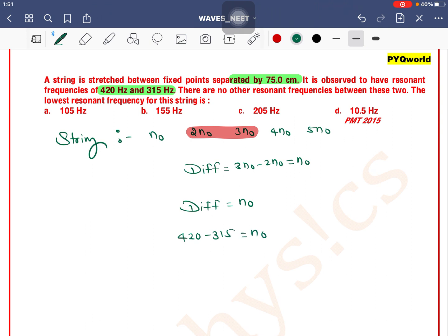So 420 minus 315 equals n0, which equals 105 Hz. Option A is the correct answer.